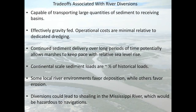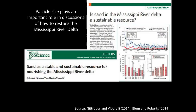On the other hand, there are some concerns. Continental-scale sediment loads are probably only half of what they used to be, largely due to dam construction in the Missouri River basin. Some local river environments favor deposition whereas others favor erosion, raising questions about where to place diversions. One of the most significant concerns is that diversions could lead to shoaling in the Mississippi River — diverting water would slow the river's flow, causing heavy material like sand to settle out and form sandbars, which would be hazardous to navigation.